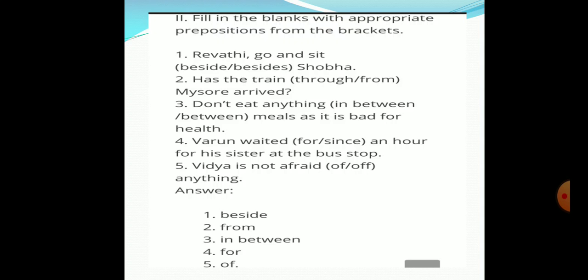In second section, there are some blank places. Five blank places are there. For each blank place, there are two bracket words. You have to underline the appropriate preposition and fill in the blank with correct answer. First one, Revathi, go and sit. Beside is correct there. Beside Sobha.